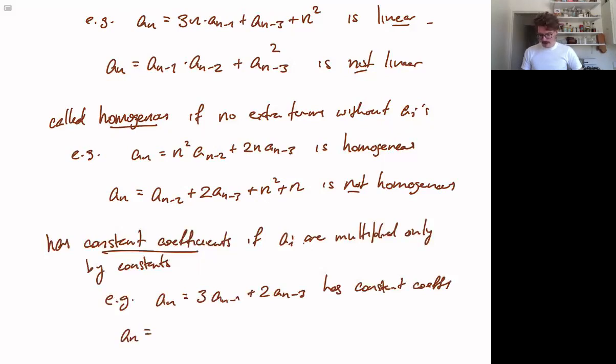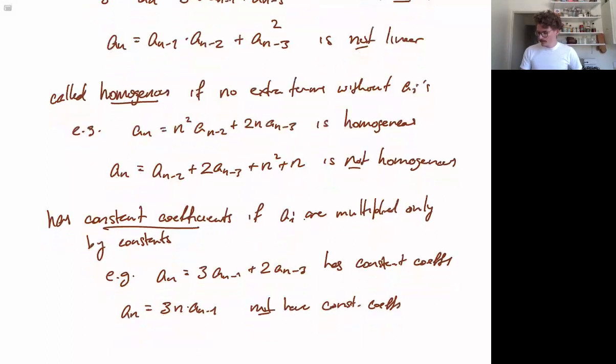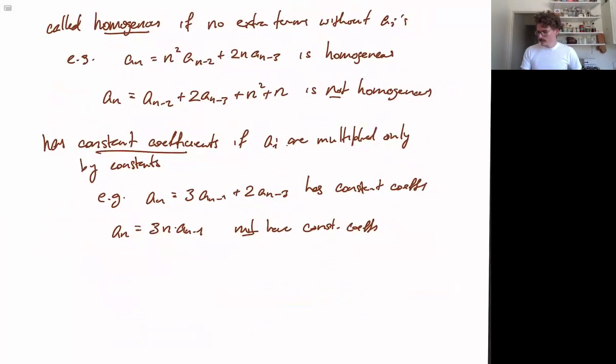As opposed to something like an equals 3n times an minus 1. It does not have constant coefficients. Because this term is not a constant. 3n is a non-constant function.